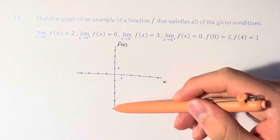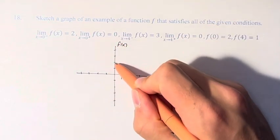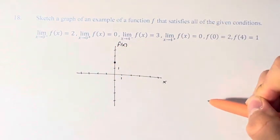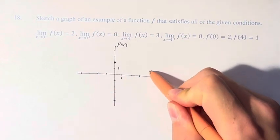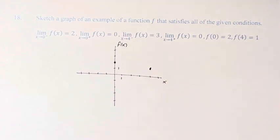f of 0 equals 2. That means at x equals 0, the value of the function is 2. f of 4 equals 1. That means x is equal to 4, the function is equal to 1. So those points we know are on our function.